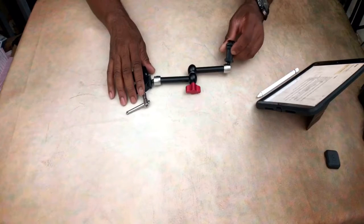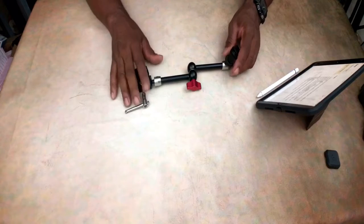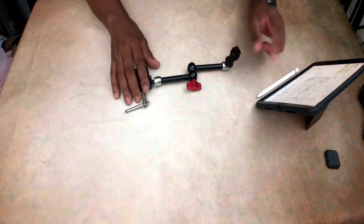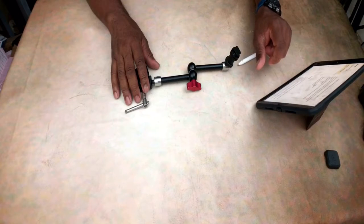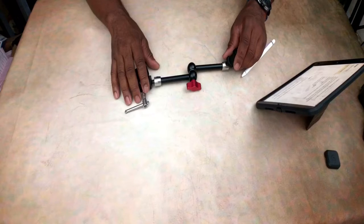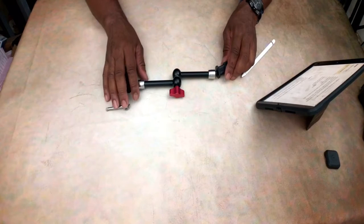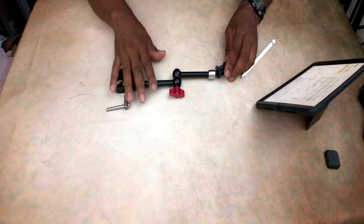It's going to allow a lot more flexibility within your workflow, and I'd have to recommend this. This is the Pangshi 11 inch adjustable articulating friction magic arm - basically a magic arm, 11 inches, rated at 22 pounds.